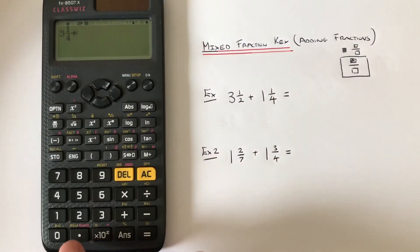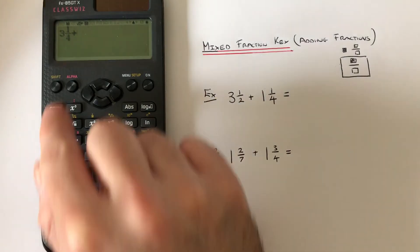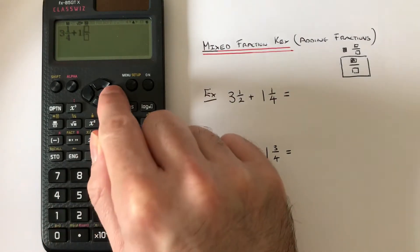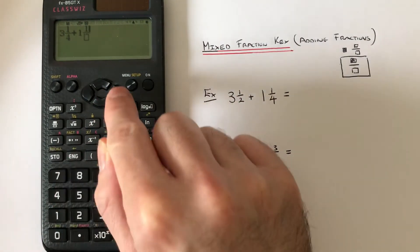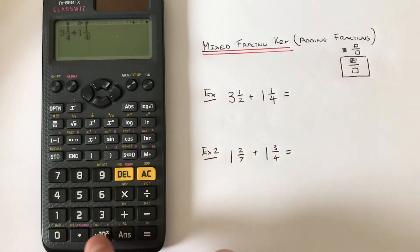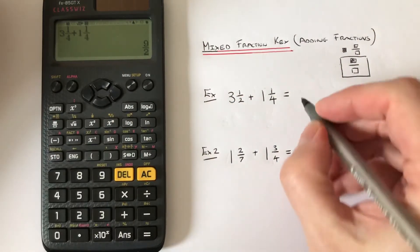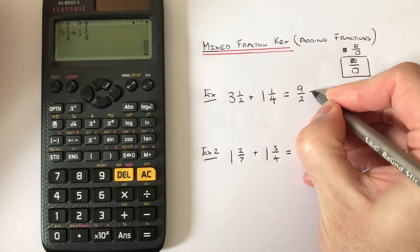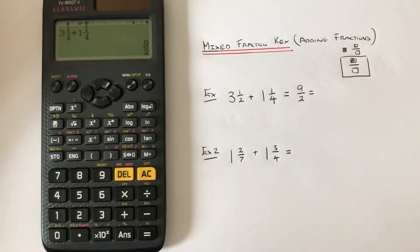Press the right key, then equals. The answer comes up as an improper fraction. If you want to change this back to a mixed number, press shift and then SD, which will give us 4½.